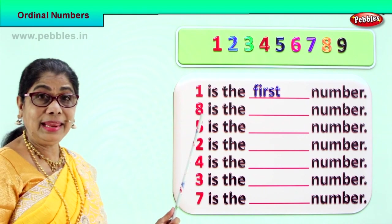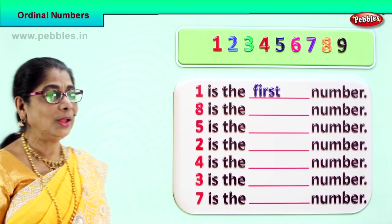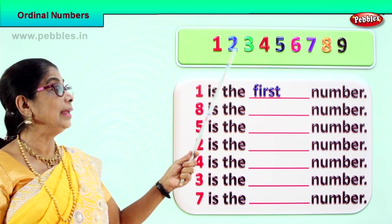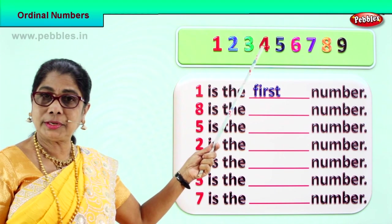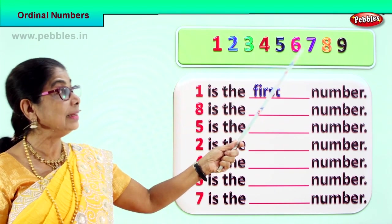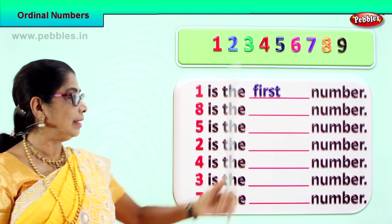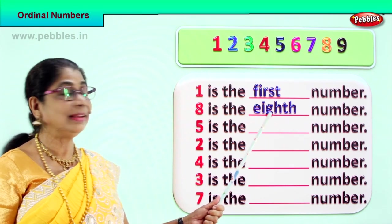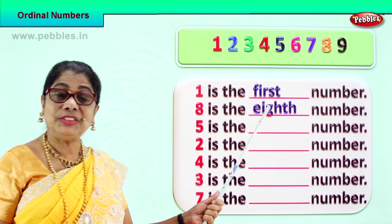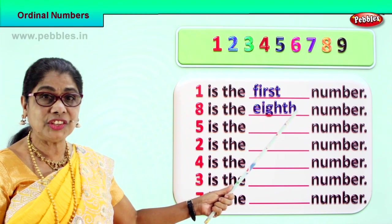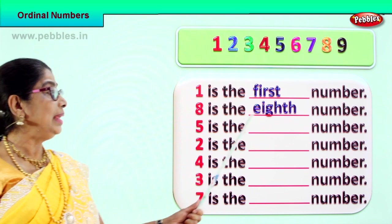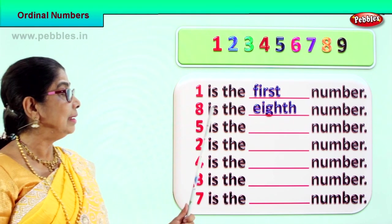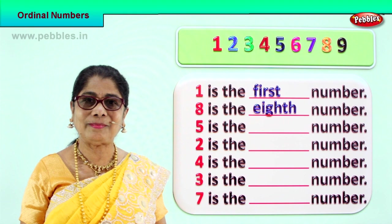Next, you have number eight here. Let's see in ordinal position — where does it come? First, second, third, fourth, fifth, sixth, seventh, eighth. Eight is the eighth number. Spell it: E-I-G-H-T-H. Say it again: E-I-G-H-T-H. Eight is the eighth number.